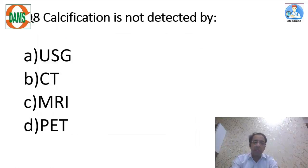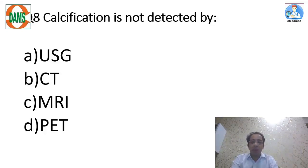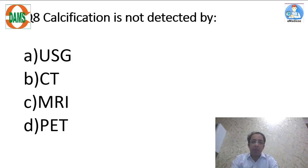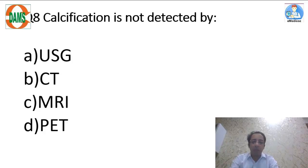Calcification is best detected by CT, but this question asks what cannot detect it. Calcification is detected by structural investigations like CT. MRI can pick up calcification on susceptibility weighted imaging. Ultrasound can pick up calcification as a hyperechoic focus. PET scan is only based on metabolism — it is a functional test and cannot pick up calcification. So the answer is D: PET scan cannot pick up calcification.